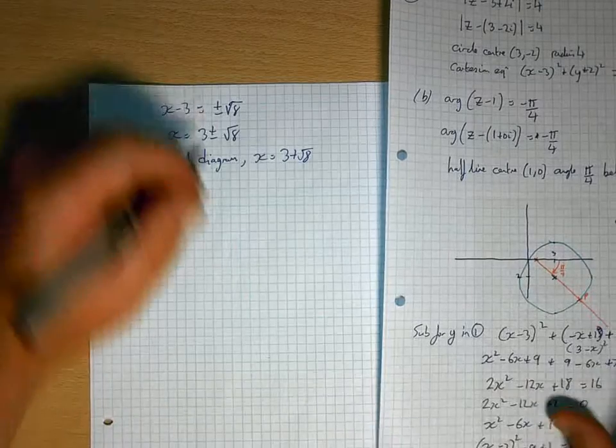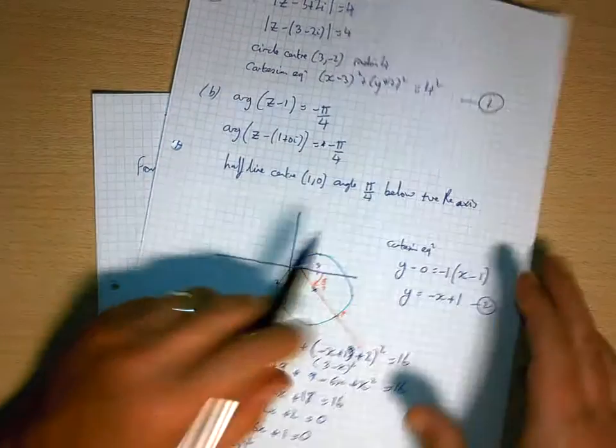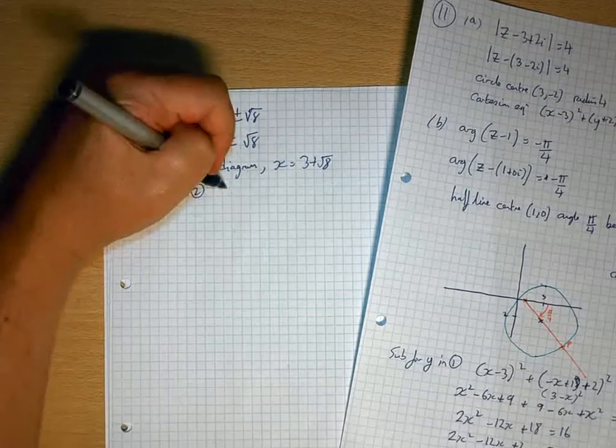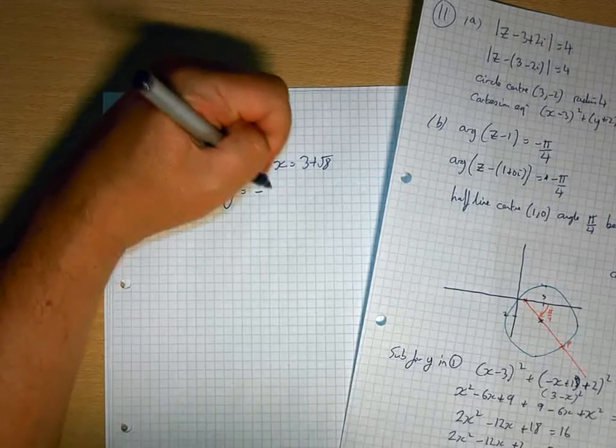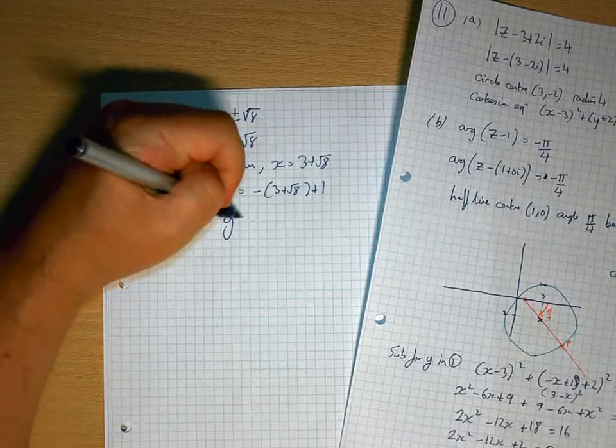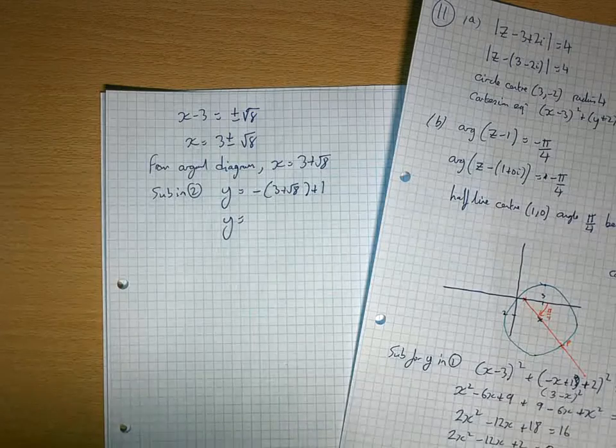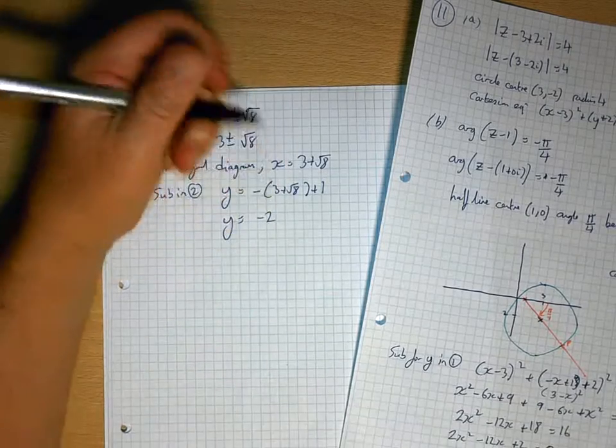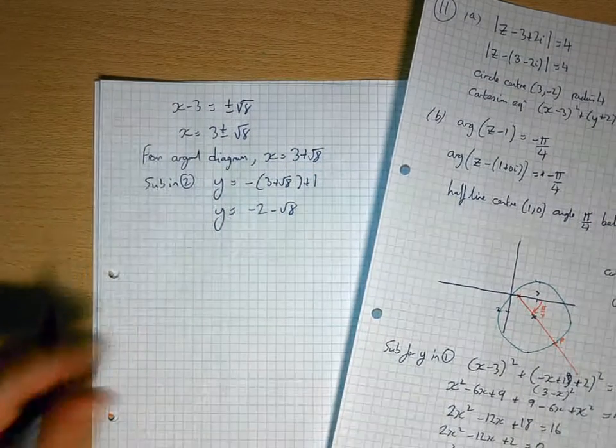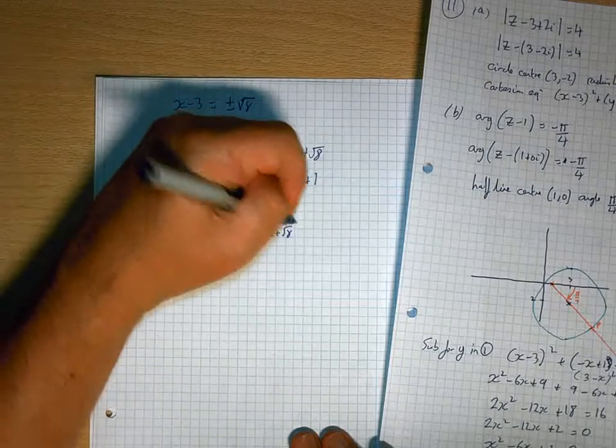And then if we put that into equation 2 to find the y-coordinate, y will be minus... So what have we got there? So here we're going to have minus 2 minus root 8. Or y equals minus 2 plus root 8.